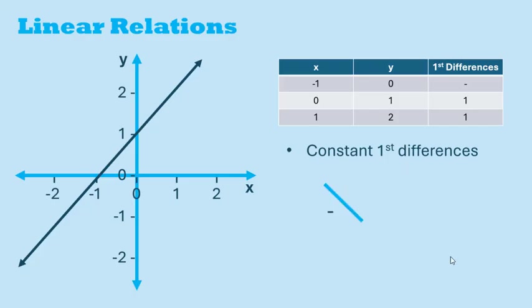A line going down has a negative slope. A line going up has a positive slope. A horizontal line has 0 slope. And a vertical line has an undefined slope. A steeper line would have a larger slope.